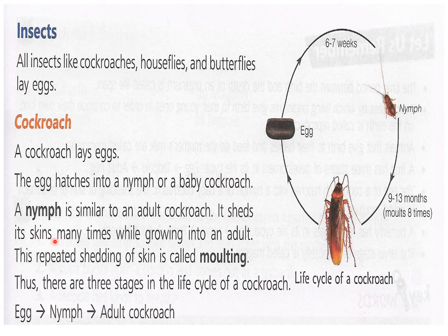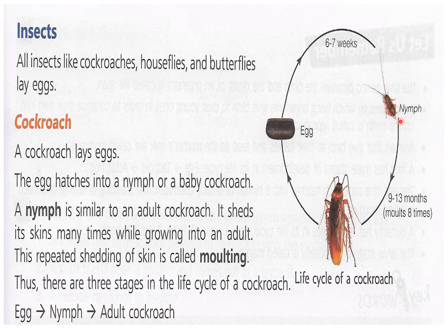The nymph sheds its skin many times while growing into an adult. This repeated shedding of skin is called molting — this is a very important term. Molting means shedding the skin. The nymph gives up its old skin and comes out as a white color, then again the skin hardens, and then it sheds its skin again.